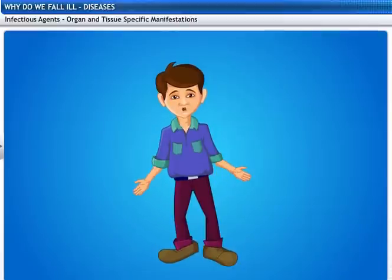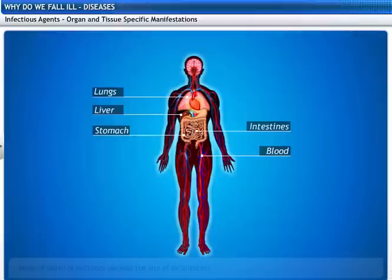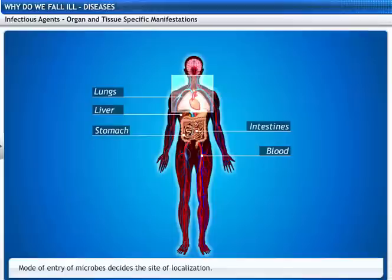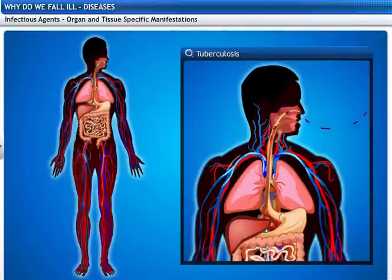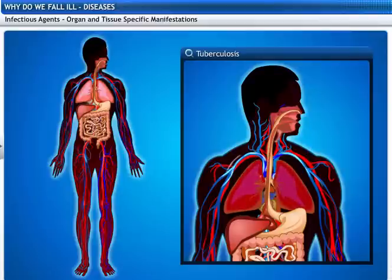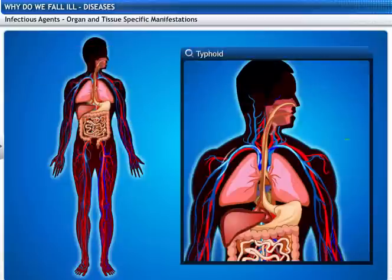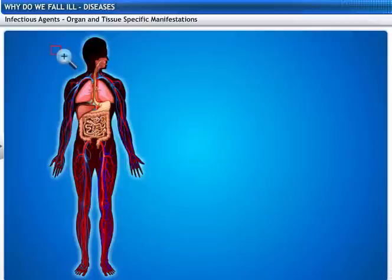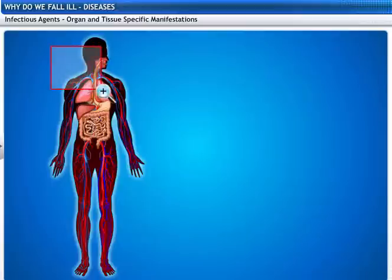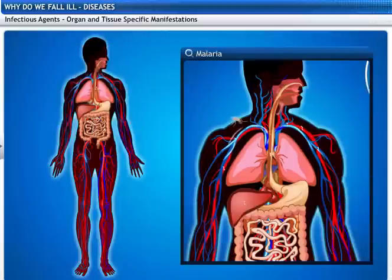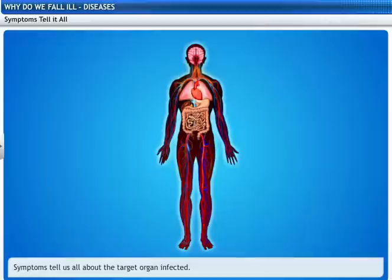Do these infectious agents attack a specific part of the body? Different infectious agents or microbes target different parts of the body. If microbes enter from the air via the nose, they localize in the lungs and cause tuberculosis. If microbes enter through food or water via the mouth, they affect the gut lining and cause typhoid. If microbes enter the liver, like viruses do, they cause jaundice. Microbes that cause malaria enter through a mosquito bite, go into the liver, and later destroy the red blood cells.